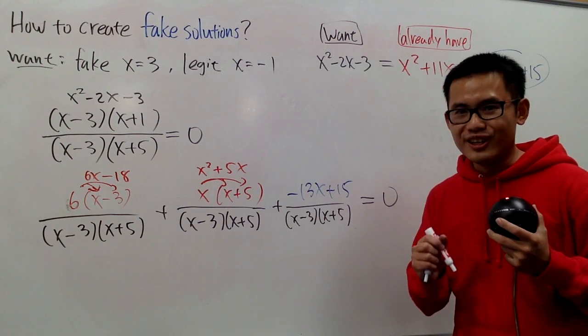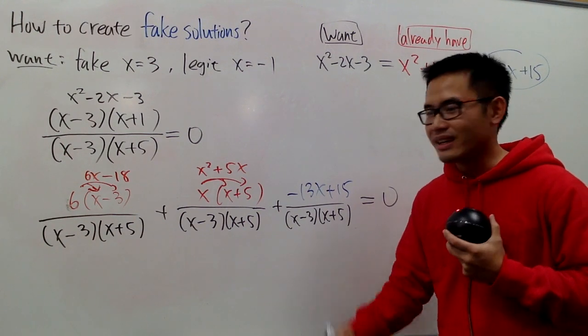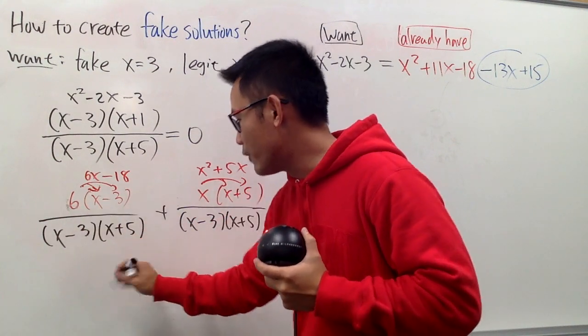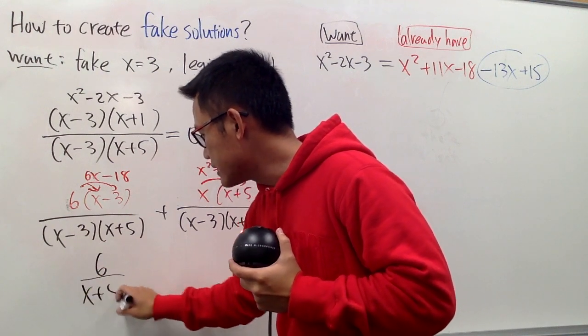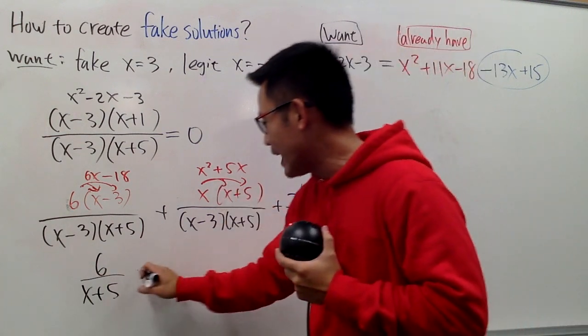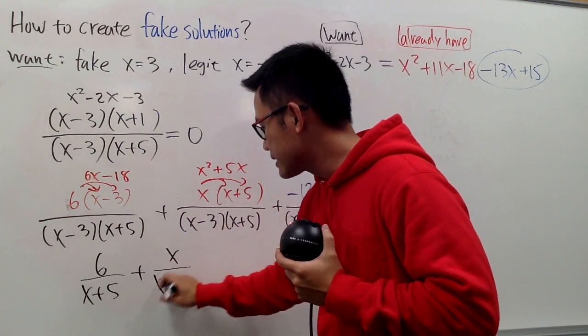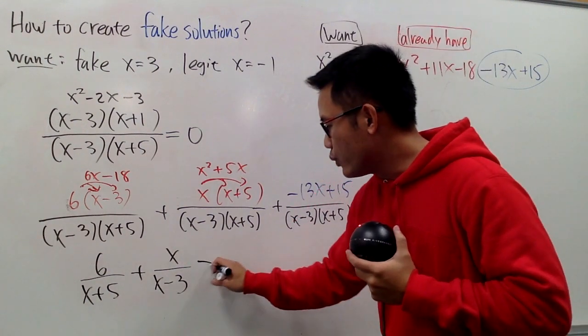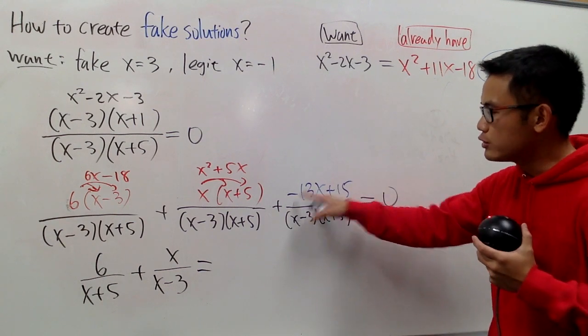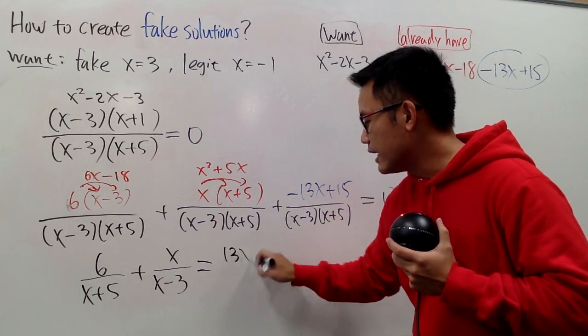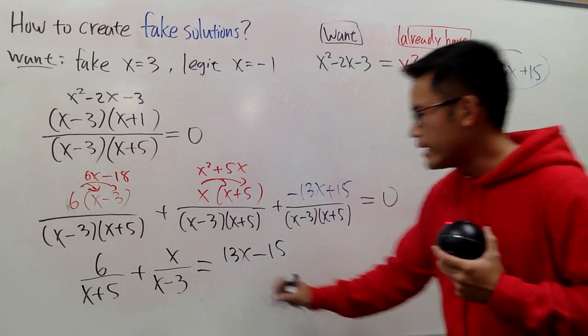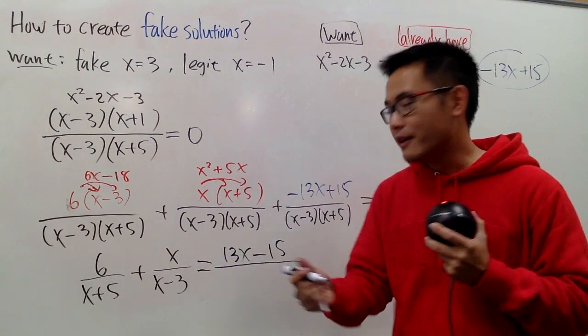At the end, here is the final result you can present to your student whatsoever. Of course, don't leave it as how it is. Be sure you cancel out the x minus 3. So we will first have 6 over (x plus 5). And next, cancel out the x plus 5. So we have plus x over (x minus 3). And this is equal to, as I said earlier, I will move this to the right-hand side. When I move this to the right-hand side, this becomes positive 13x and this becomes negative 15. And the denominator is this. So I put this down over. And make your student factor this out.